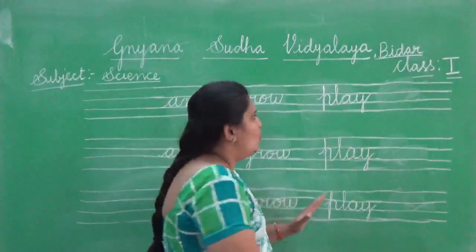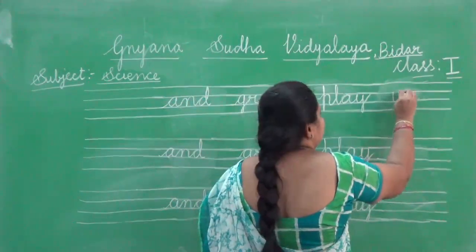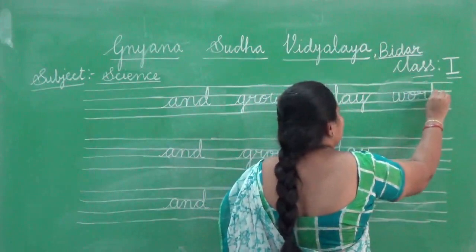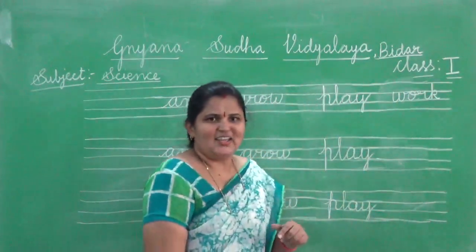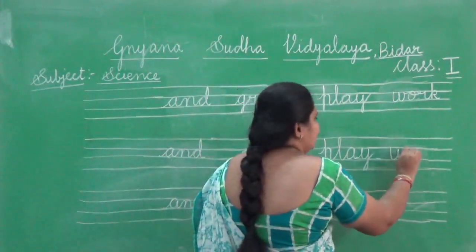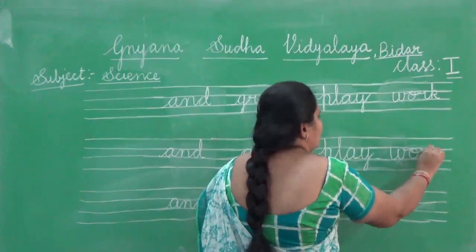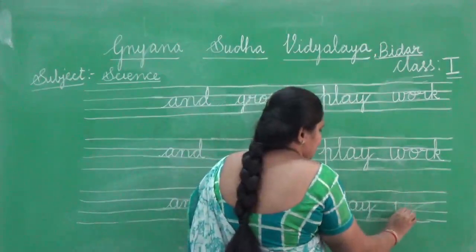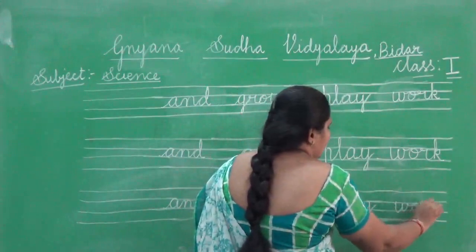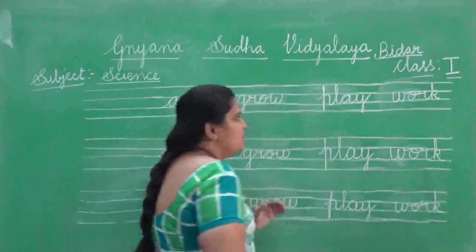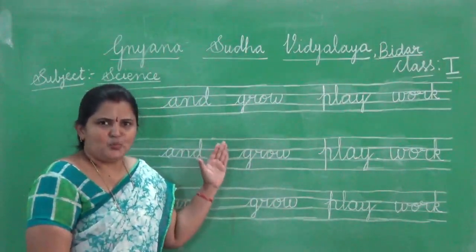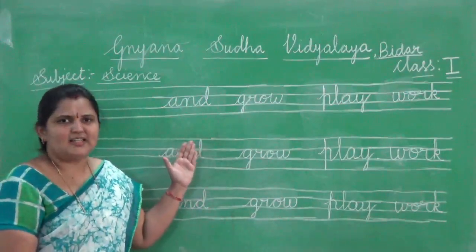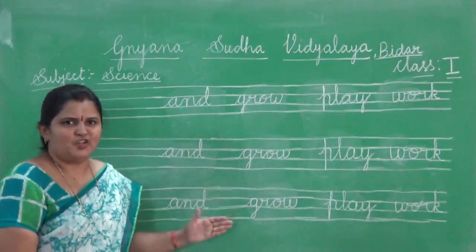And the last one is work. W — only two lines, between two lines. O — also same. R, K. W, O, R, K — work. Look at the board. W, O, R, and K. Work. These are four letter words related to lesson number one, subject science. You are going to write yesterday's four words and today's four words — three letter and four letter words — five times in your homework.